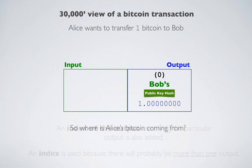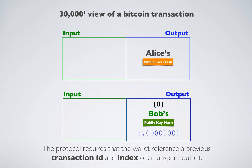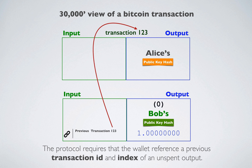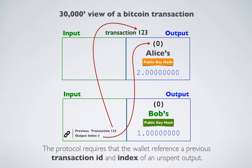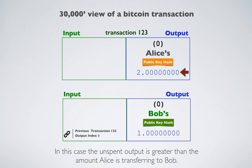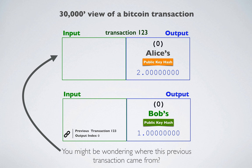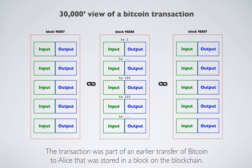So where is Alice's Bitcoin coming from? The protocol requires that in order for Alice to make the transfer, the wallet must reference a previous transaction ID and index of an unspent output controlled by Alice that contains enough Bitcoin to satisfy the outgoing amount to Bob. In this case, it's a single unspent output of Alice's that is greater than the amount she is transferring to Bob. That previous transaction was part of an earlier transfer of Bitcoin to Alice that was stored in a block on the blockchain.